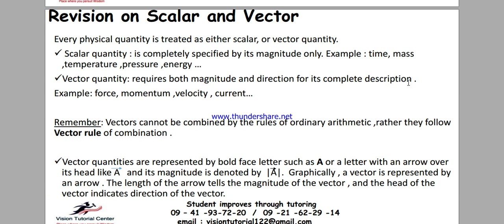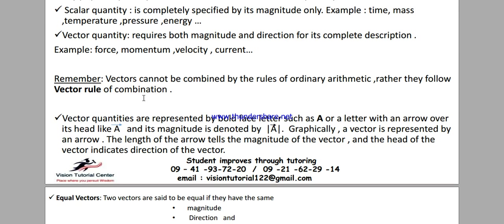When it comes to the vector quantity, it requires both magnitude and direction for its complete description. This is the minimum requirement of a vector quantity — magnitude and direction. For example, force, momentum, velocity, and current density — they need direction.